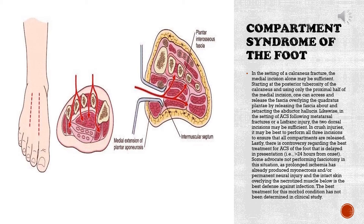Starting at the posterior tuberosity of the calcaneus and using only the proximal half of the medial incision, one can access and release the fascia overlying the quadratus plantae by releasing the fascia about and retracting the abductor hallucis. Likewise, in the setting of ACS following metatarsal fractures or a less frank injury, the two dorsal incisions may be sufficient. In crush injuries, it may be best to perform all three incisions to ensure that all compartments are released.